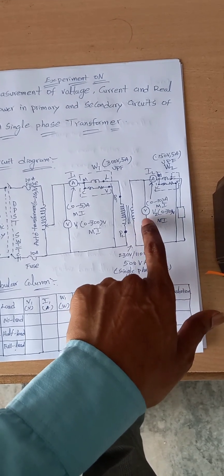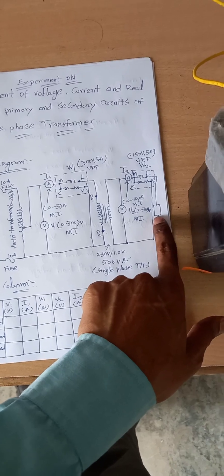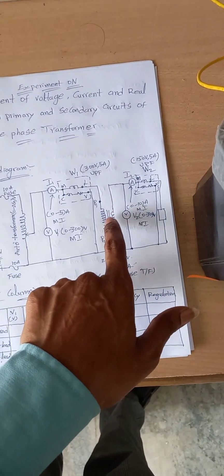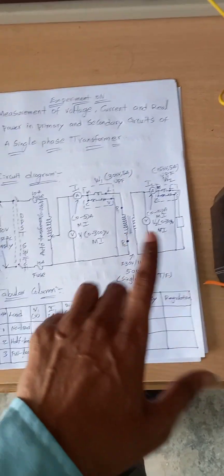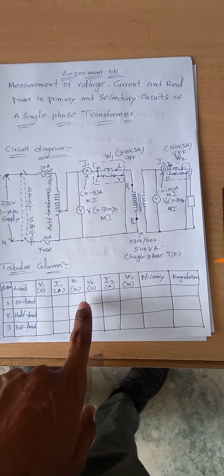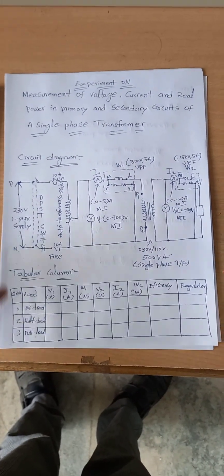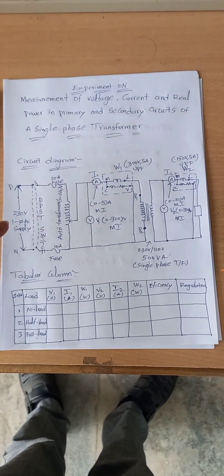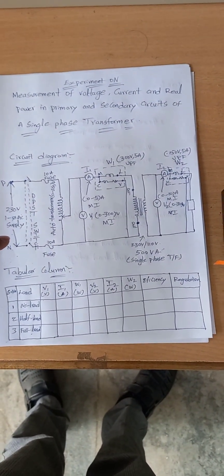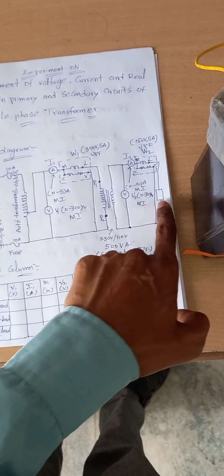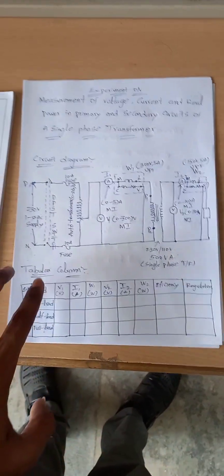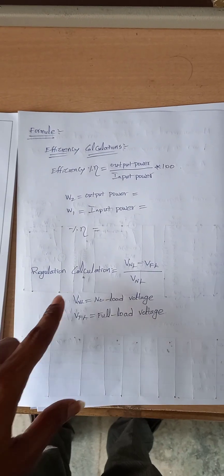In the load test we connected the voltmeter across the load only. But here we are going to measure the secondary side voltage, current, and power, so we are connecting the voltmeter across the secondary winding — that's it. Other than that, everything else is the same. The tabular column is also the same: no load condition, half load, full load, and V1, I1, W1, V2, I2, W2, efficiency, and regulation. The only difference compared to the load test is the voltmeter placement — there we connect it across the load and here we connect it across the secondary winding.